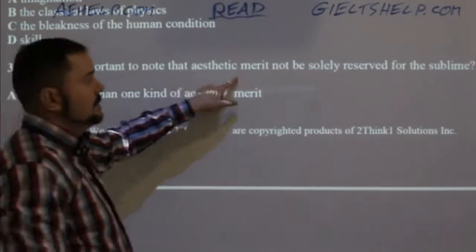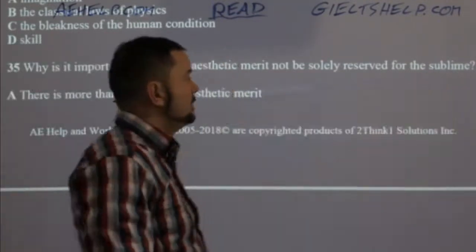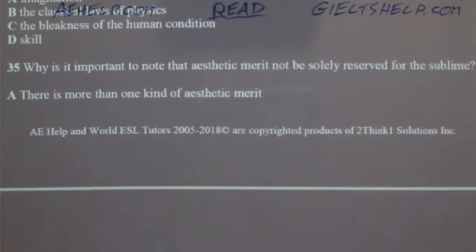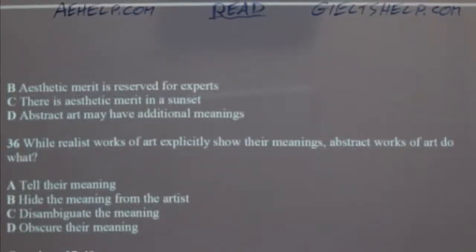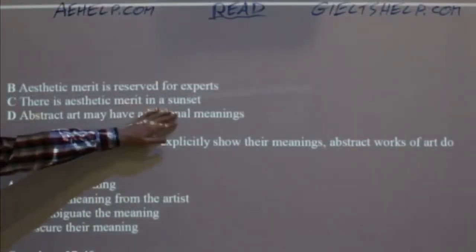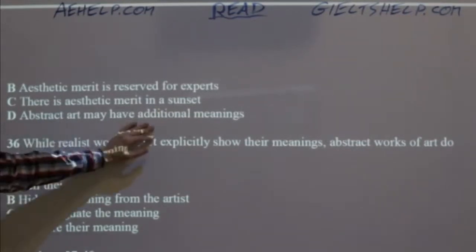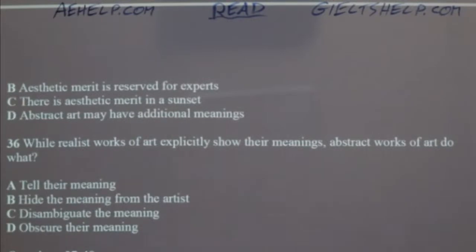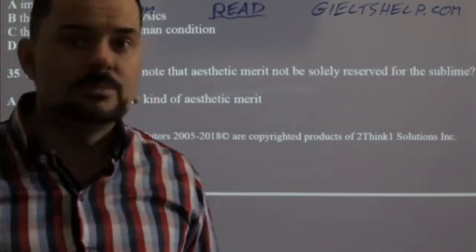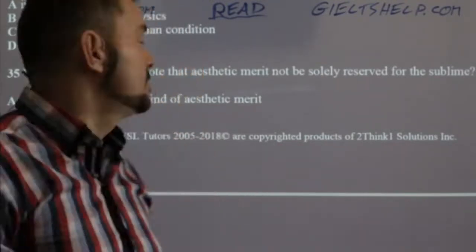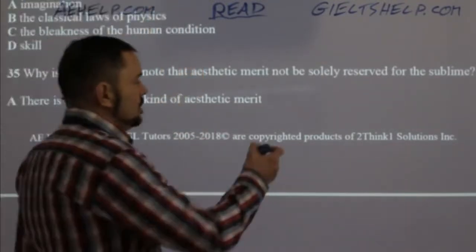Why is it important to note that aesthetic merit not solely be reserved for the sublime? Because there's pleasure in a lot of different things — sunsets, food, and so on. Looking at the choices: aesthetic merit is reserved for experts; there is aesthetic merit in a sunset; abstract art may have additional meanings. The best answer is A — there's more than one kind of aesthetic merit. C is just one type, whereas A captures the whole concept. Use your logic as well — IELTS doesn't lie.